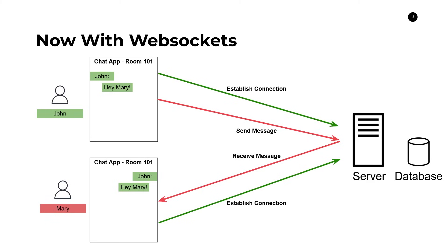The server now has knowledge of who is actually connected to this application and can both receive and push messages into both clients. This is the main idea with WebSockets. Instead of it being request-response, it's what's called full duplex or bi-directional communication. In this model, the client can initiate actions that send content to the server, and the server can initiate actions to send content back to the user. This is the key difference between these two things.